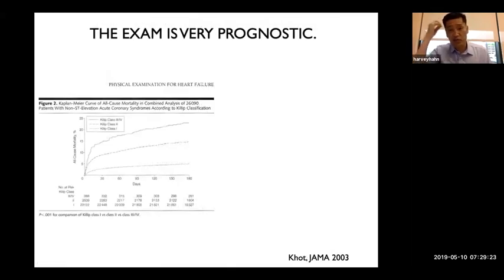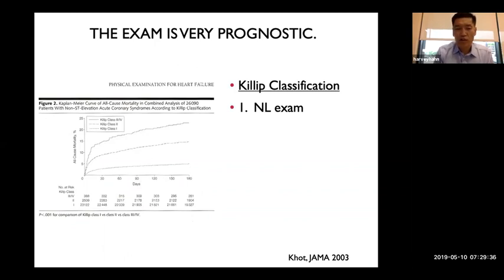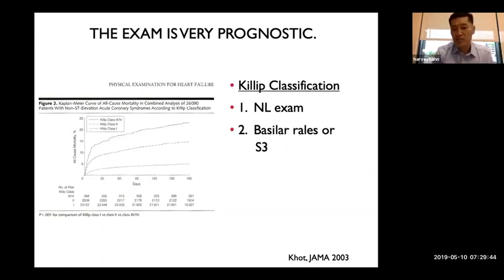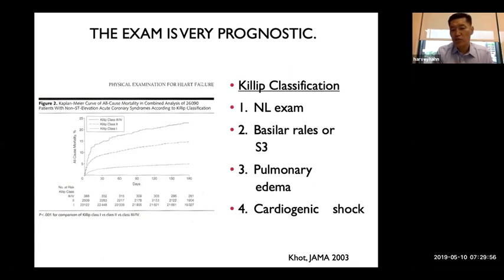The Killip classification predicts mortality in ACS. Class I is a normal exam. Class II has basilar crackles or an S3 gallop. Class III has pulmonary edema throughout the lungs. Class IV is cardiogenic shock with low blood pressure. Class I patients do well; Class II has about 10% 30-day mortality; Classes III and IV have roughly 15–20% mortality within the first month.